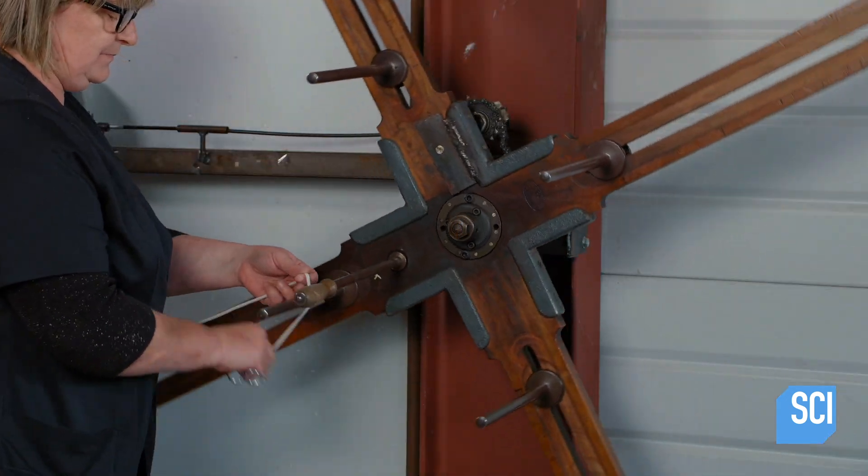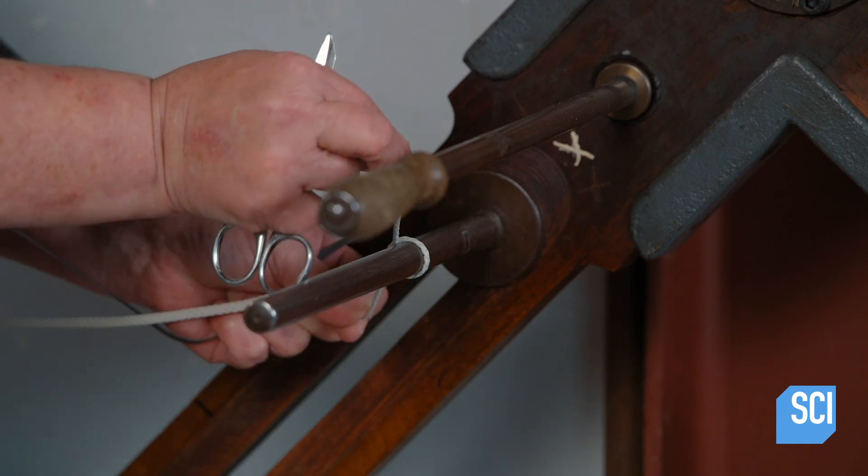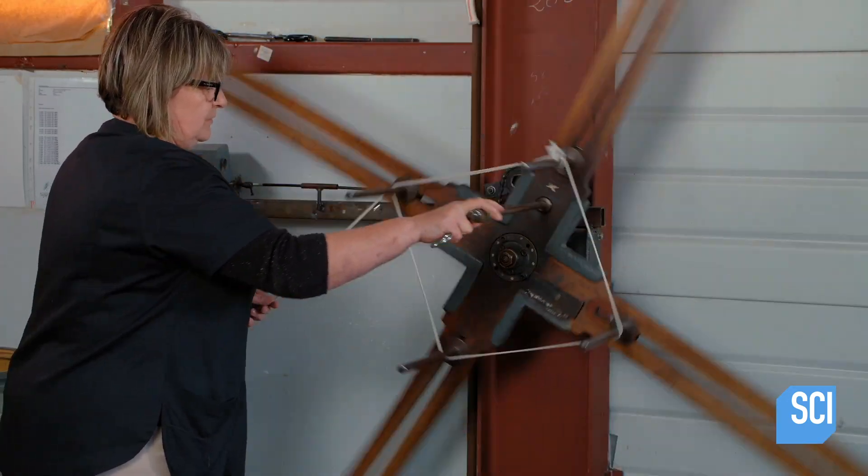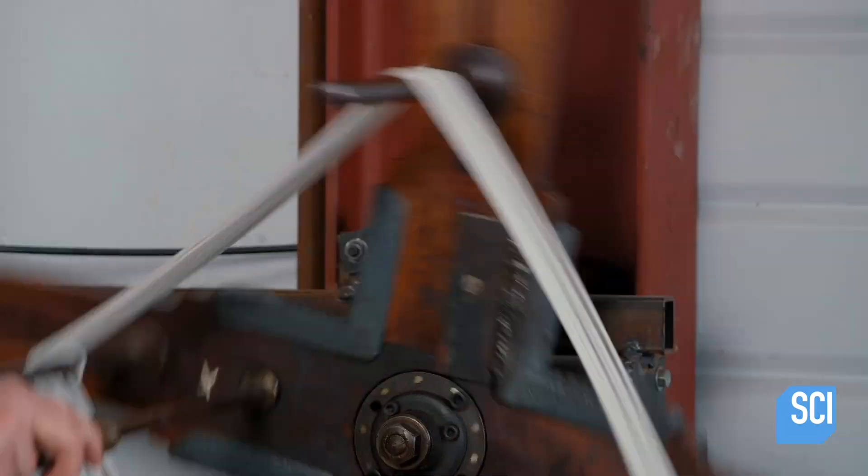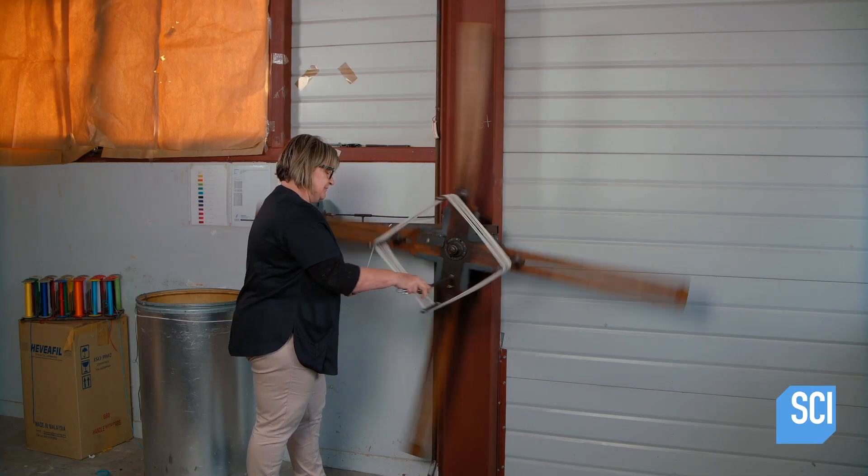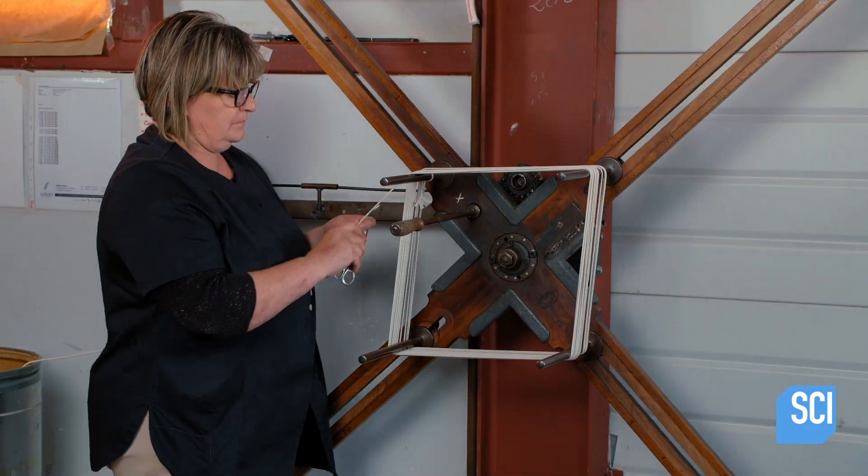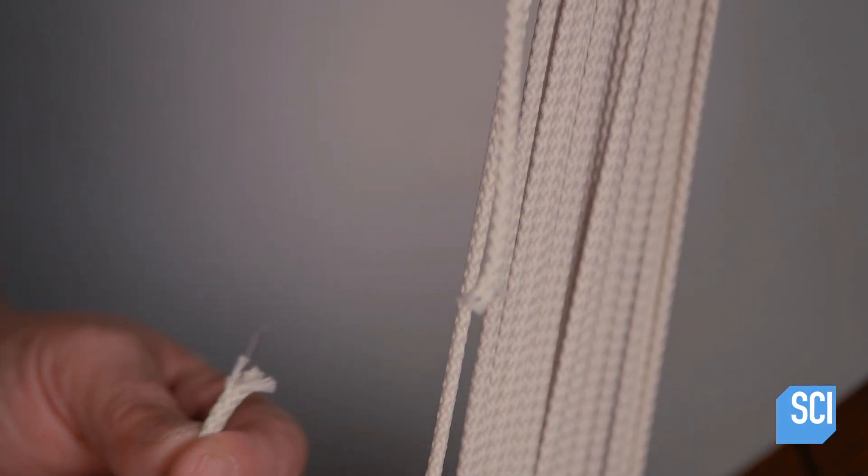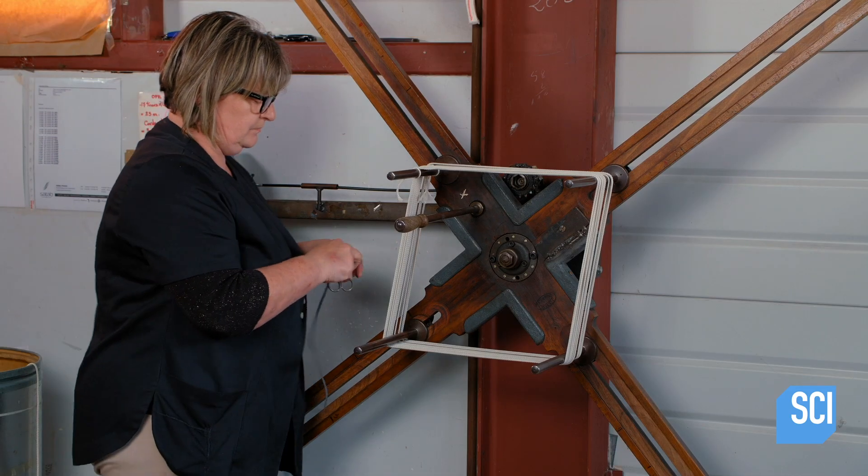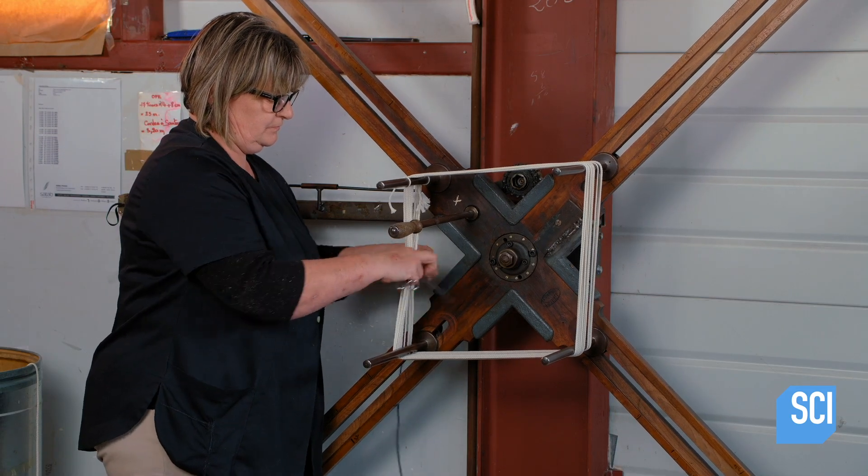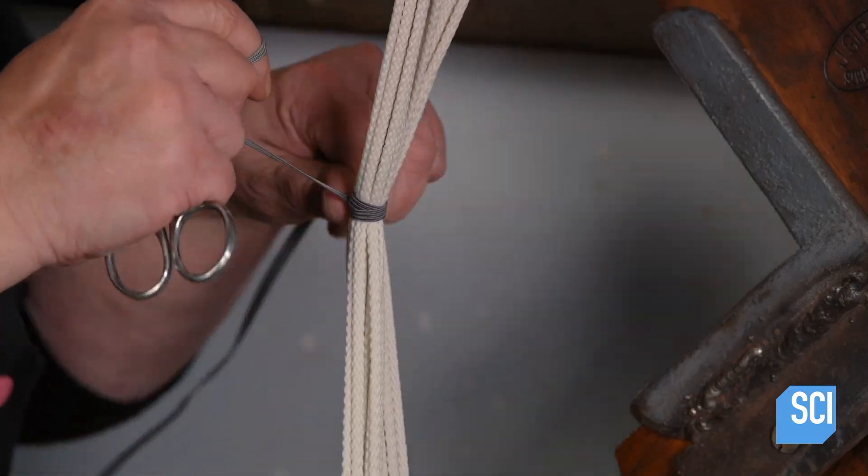Once the knitted or braided cord is ready, a worker adjusts four metal pegs of a winding device to the shoelace length they're making. Then she winds the cord around the pegs up to 250 times depending on the cord diameter. She cuts the end and ties the cords together so that she can easily transfer them to what's called a tipping machine.